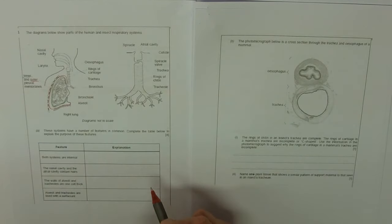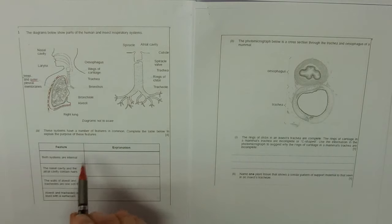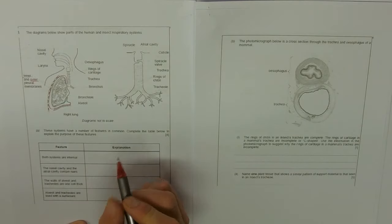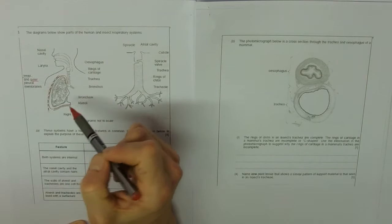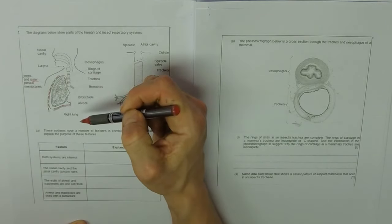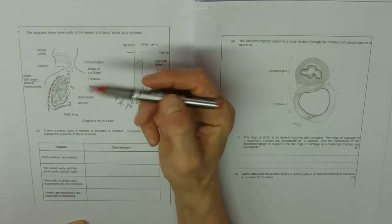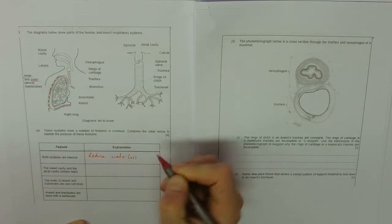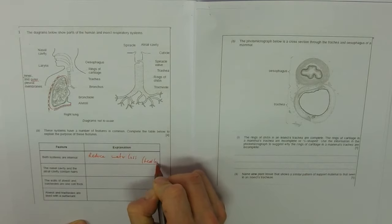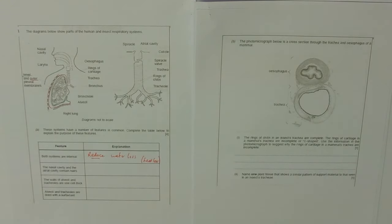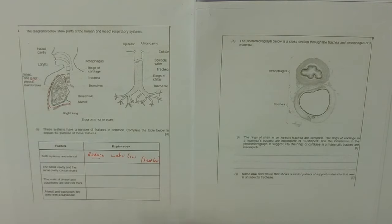It starts off with a simple table explaining the purposes of these features. You should be thinking of your gas exchange notes and properties of gas exchange surfaces. Why are these internal? Well, to reduce water loss. These are moist surfaces, and if you're on the outside they'd dry out. You could also say heat loss, but they reduce it—they won't be able to stop it. They won't give you the mark for prevents or stops.